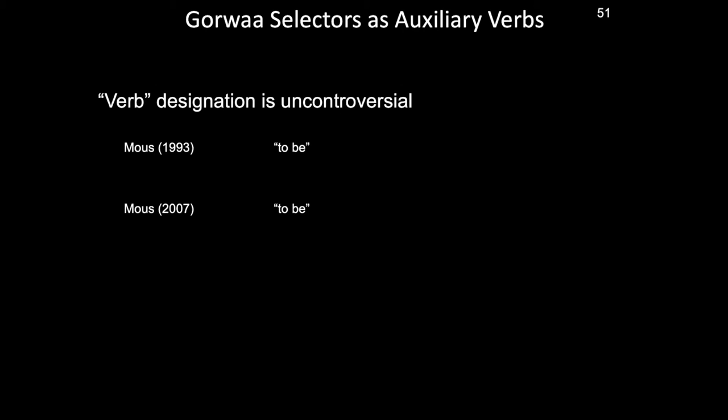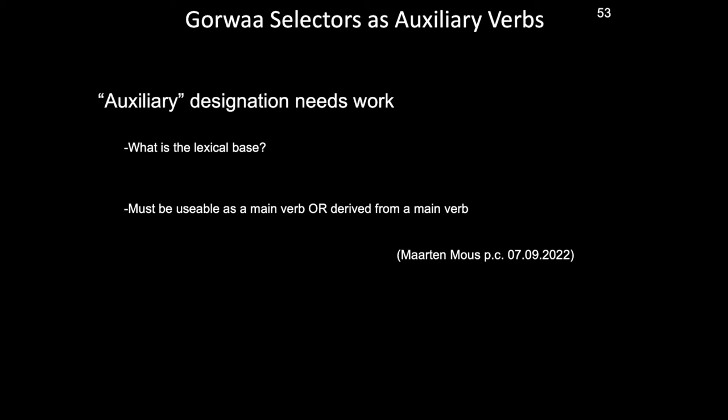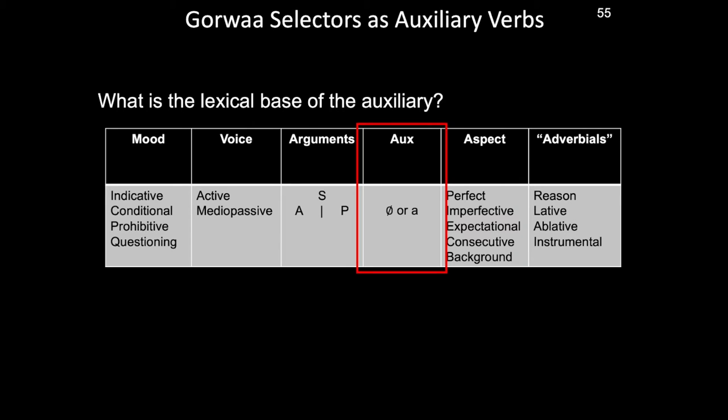Having introduced the auxiliary and its phonological alternation between 'a' and zero, I'd like to note that referring to the selector as verbal in nature is not really anything new. Pace Banti 1997, both Maus 1993 and 2007 establish the selector as a verb meaning something like 'to be.' What is slightly more difficult is arguing the selector's role as an auxiliary verb. In a recent email exchange with our colleague and my mentor Martin Maus, he reminded me that to make the assertion that the selector is an auxiliary, I would have to first establish what exactly its lexical base was, and then establish a clear link between this lexical base and the more canonical lexical verbs in the language.